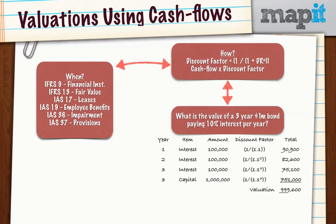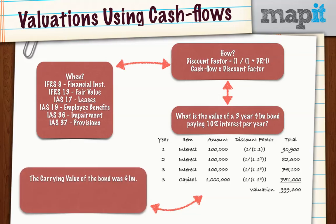Why would that be important in the exam? Well, let's say we know the carrying value of the bond was one million. The examiner could be leading us to do an impairment test on the bond, because by looking at the valuation of 999,600, we can see that the bond is impaired by 400. That's a small amount — it might be a rounding difference — but you can see how that would be important. Just by giving you that information, the examiner could be leading you towards doing an impairment test, so you need to be able to do that calculation quickly and easily.